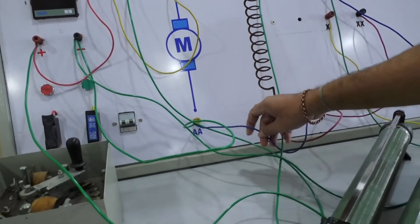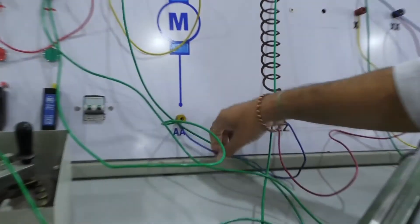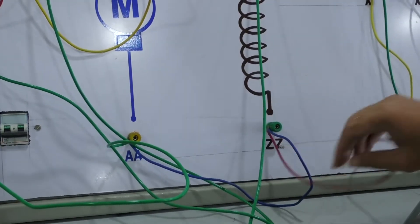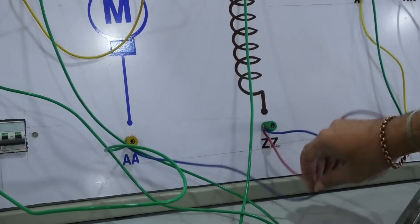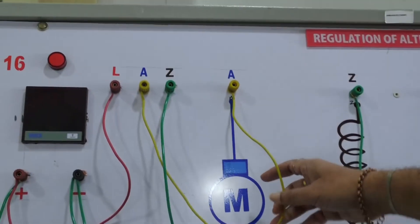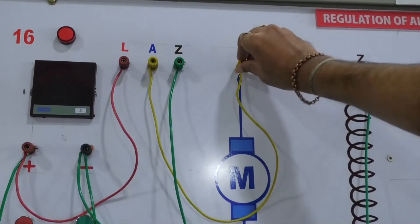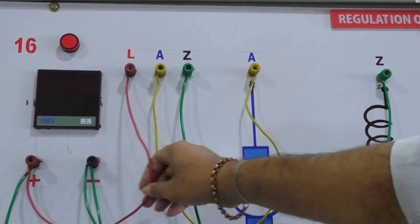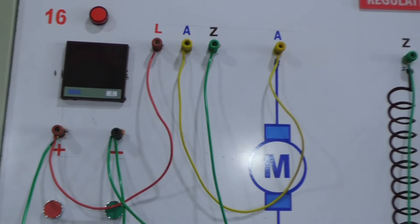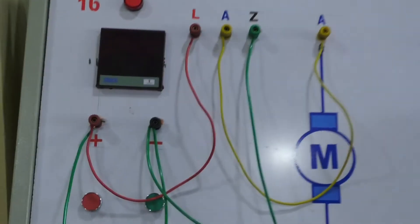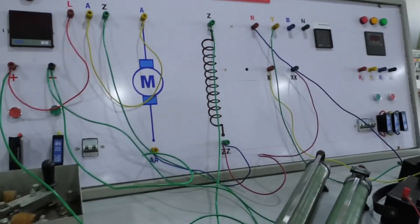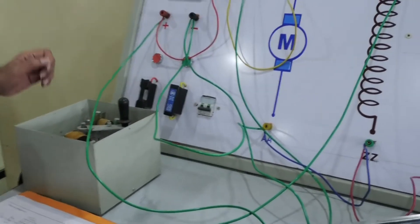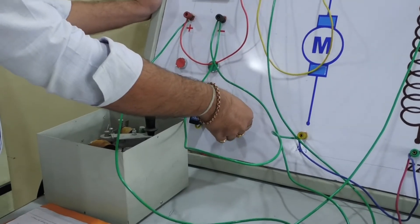Terminal A is connected to ZZ, and A is connected to the positive terminal. These are the connections as per the circuit diagram, and we are going to perform the experiment.